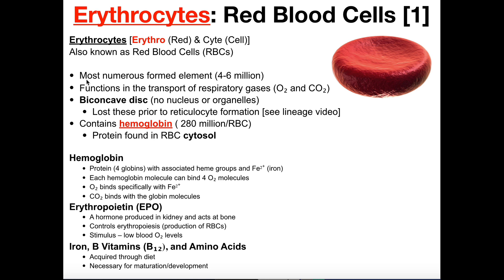In the blood, erythrocytes are the most numerous of all the formed elements — more numerous than leukocytes, which are white blood cells, and thrombocytes, which are platelets. Erythrocytes number about 4 to 6 million in the blood at any given time, and this depends on several factors: body size, altitude — for example, living a mile above sea level in Colorado — and physical fitness all tend to result in more red blood cells.